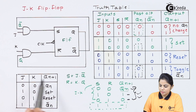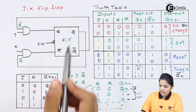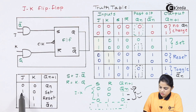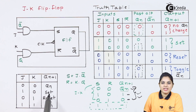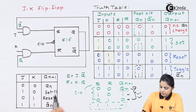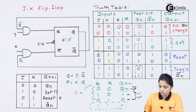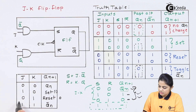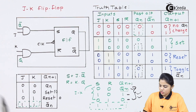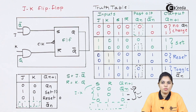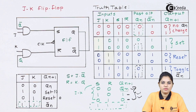Let's write the complete truth table of JK flip-flop. For J=0, K=0, the output is unchanged: QN. For J=1, K=0, the flip-flop is in the set condition and output is 1. For J=0, K=1, it is the reset condition and output is 0. For J=1, K=1, the output equals QN̄. The drawback of SR flip-flop is overcome because this last state can be used as a toggle state rather than being prohibited and wasted. That is how JK flip-flop is designed.